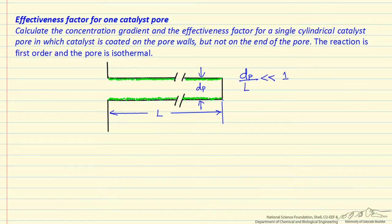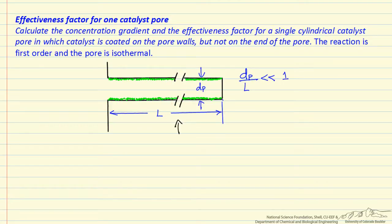In this example, we're going to look at how to calculate the effectiveness factor when we have a catalytic reaction in one catalyst pore. We've represented this pore as being very long compared to its diameter, so this is not to scale, and the break in the diagram is meant to indicate that the length is much larger than the diameter.